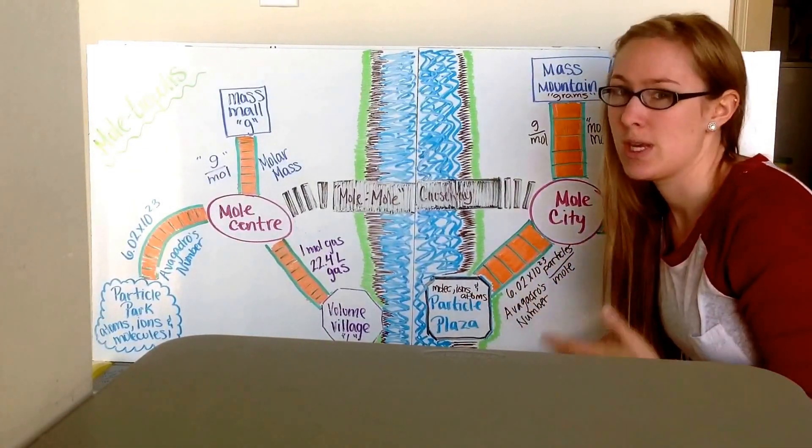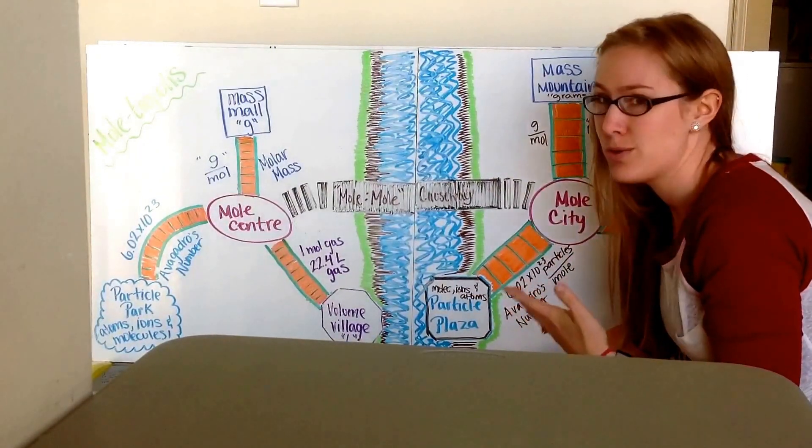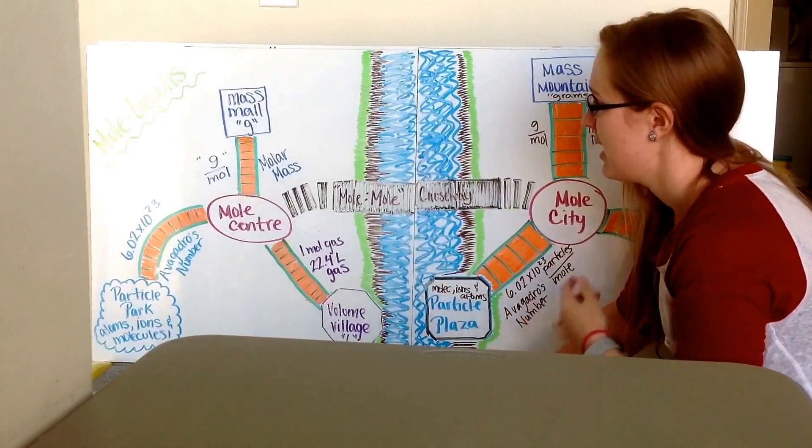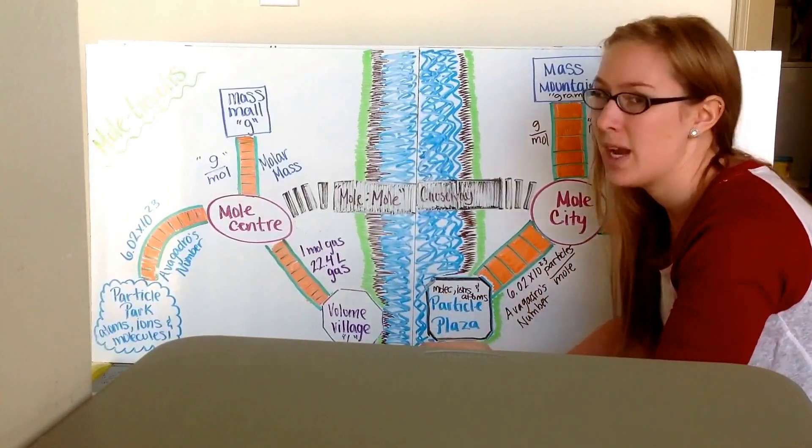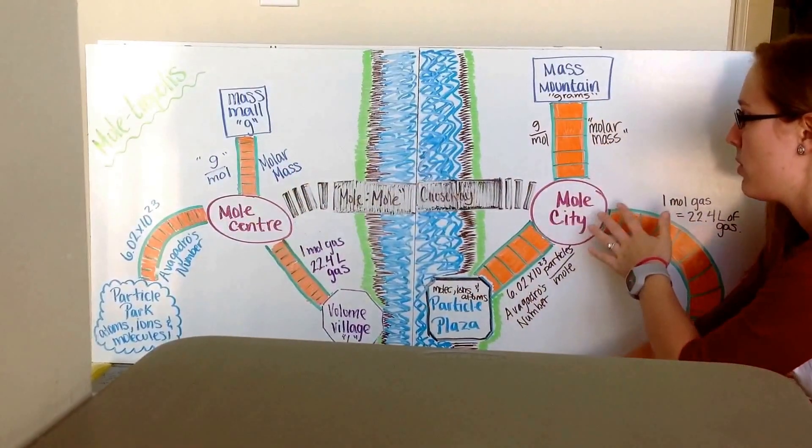But now we're getting into stoichiometry, which is the measurement of different compounds through a balanced chemical reaction. And in order to do that, we're going to have to start converting from moles of one substance all the way over to moles of another substance.